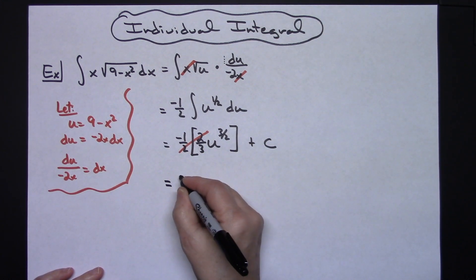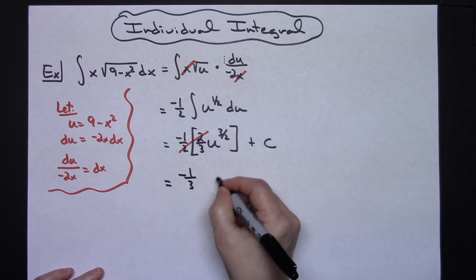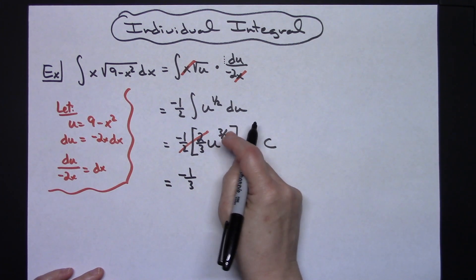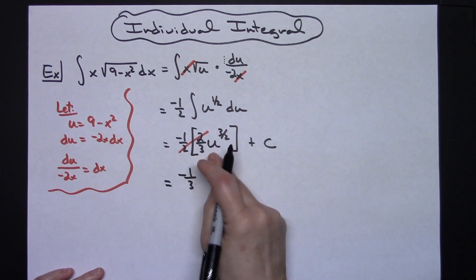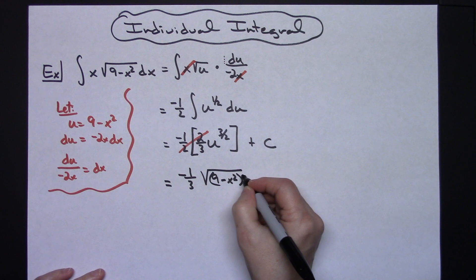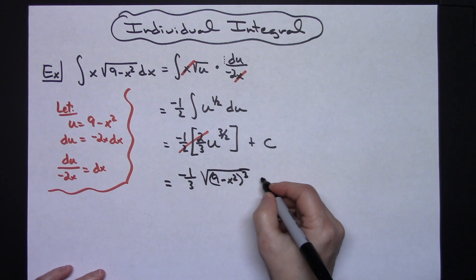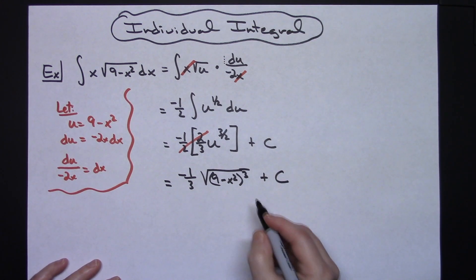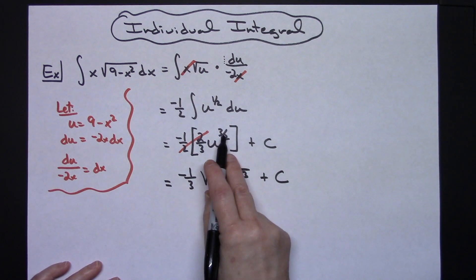We'll have negative one-third—I'm going to put this back in radical form as well as putting the u back in there—so I'm going to have the square root of 9 minus x squared to the third power, and then plus C. Quite a bit there in the last step, changing that exponential form to radical form and plugging the u back in.